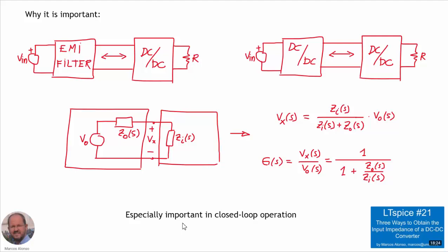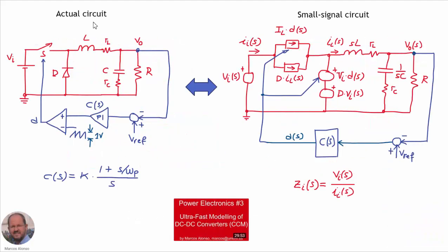Today we are going to see how to calculate the input impedance of a DC-DC converter when it is operating in closed loop and how to check the value of the input impedance by simulation. Here in this slide, we can see on the left the actual circuit of the DC-DC converter — in red, the DC-DC converter itself, and in blue, the circuitry to do the feedback and the closed loop operation. From this, taking into account the modeling procedure seen in Power Electronics number 3, we can obtain in red the small signal circuit of our DC-DC converter, and on this circuit we can also apply, as shown here in blue, the closed loop circuitry.